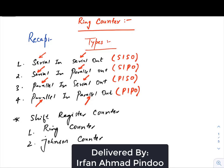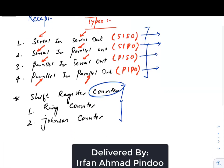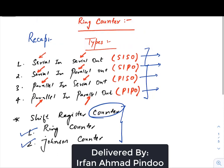Welcome back students. In this video we'll be discussing ring counter. Before we proceed further, let us recap what we have already studied. We have studied four different types of shift registers, and there are videos available regarding all four. The next thing we'll focus on is the shift register counter. There are two special kinds: ring counter and Johnson counter. In today's video we'll be mainly focusing on ring counter.